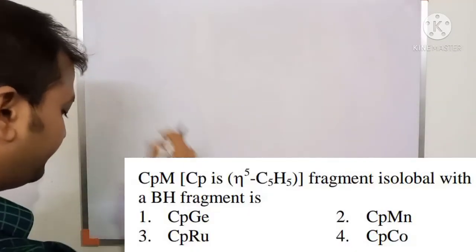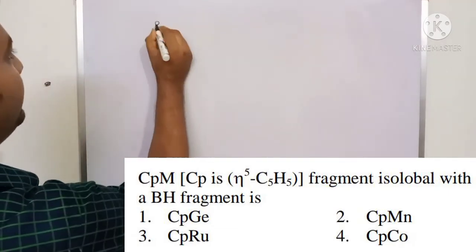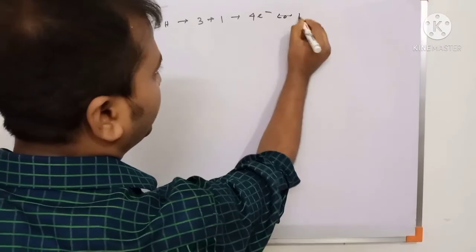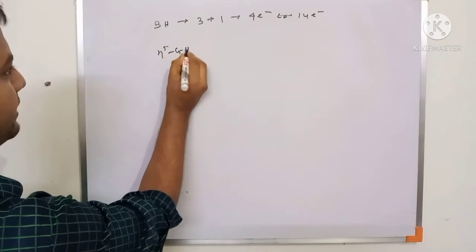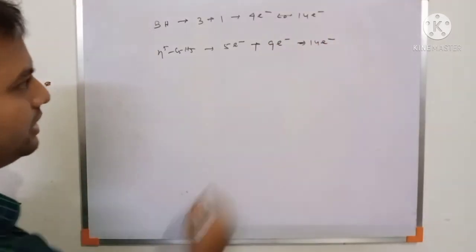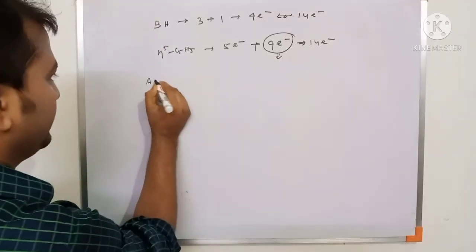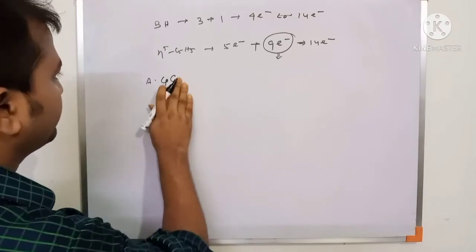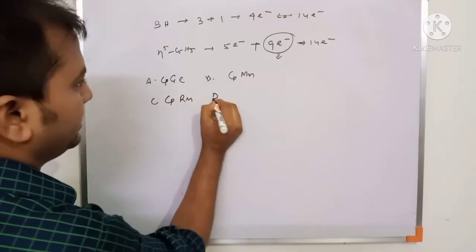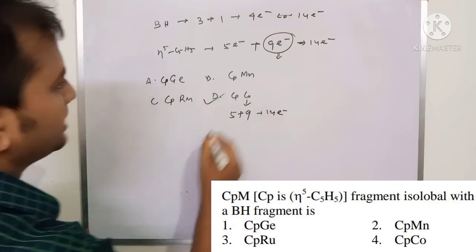Question 3: The CpM (η⁵-C₅H₅ metal) fragment is isolobal with BH. BH has boron 3 + hydrogen 1 = 4 electrons, isolobal with a 14-electron transition metal species. The η⁵-C₅H₅ (Cp) ligand donates 5 electrons, so the metal must contribute 9 electrons to reach 14. A 9-electron metal is cobalt (Co). Therefore CpCo is isolobal with BH, making option D (CpCo) the correct answer.